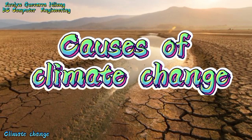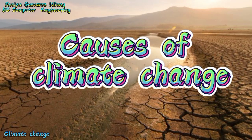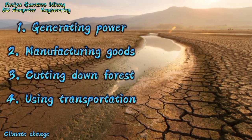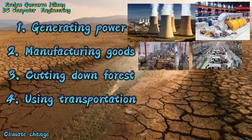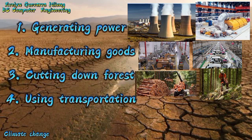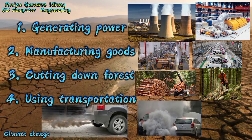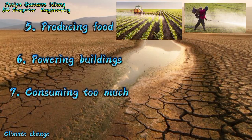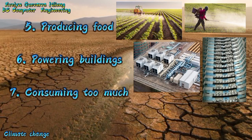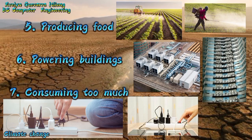Causes of climate change: 1. Generating Power, 2. Manufacturing Goods, 3. Cutting Down Forests, 4. Using Transportation, 5. Producing Food, 6. Powering Buildings, 7. Consuming Too Much.